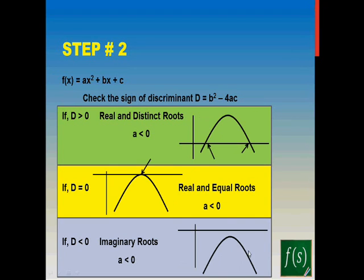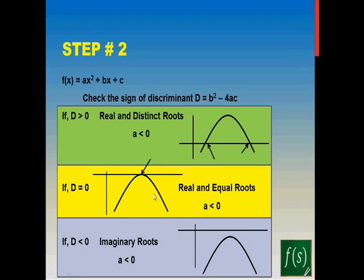For a < 0, you can invert the graph. For D > 0, you will have two real and distinct roots. If D = 0, your graph will just touch the x-axis at one point. And for D < 0, your graph will not cut the x-axis at all.